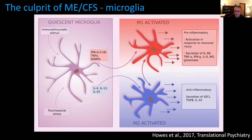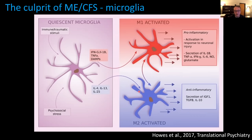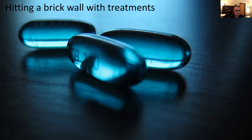Microglia also have an anti-inflammatory state. In ME-CFS, he doesn't think they're in either a pro- or anti-inflammatory state at baseline. The goal with treatments is to give something that crosses the blood-brain barrier, hits the activated microglia, and either pushes them back to the resting state or into the anti-inflammatory state — either of which could help control symptoms and perhaps correct the underlying problem.